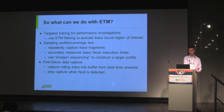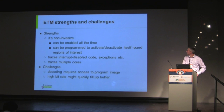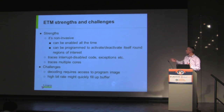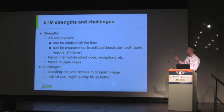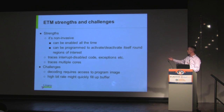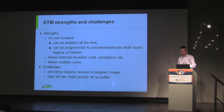Obviously there'll be a power impact from enabling background trace, but the performance impact is minimal to none. The strengths of hardware instruction trace: it's non-invasive. If you're routing trace through to system RAM, it will be very slightly invasive in that it contends for interconnect bandwidth, but it won't go through your main processor caches. You can enable it all the time, program it to autonomously enable and disable itself without waking up the core. Particularly, you can trace through interrupt-disable code — the processor trace feature doesn't care about disabling interrupts, it just continues to trace. So you can trace when you take exceptions, disable interrupts, return from exceptions, and get a complete picture of what the core is doing.